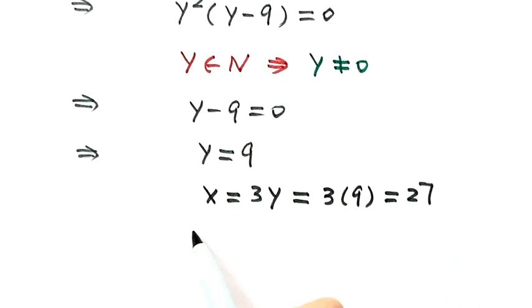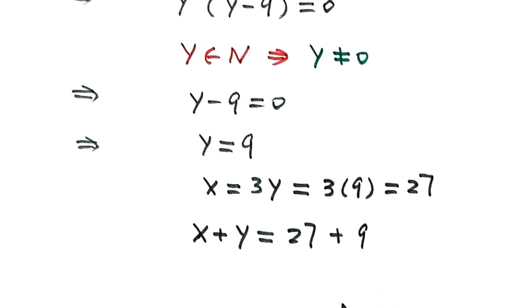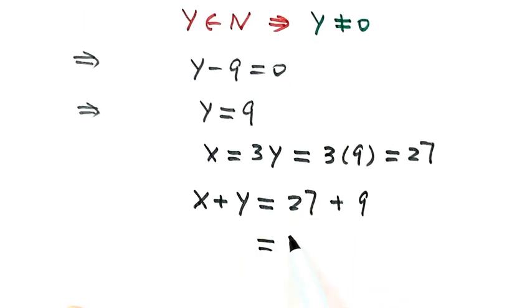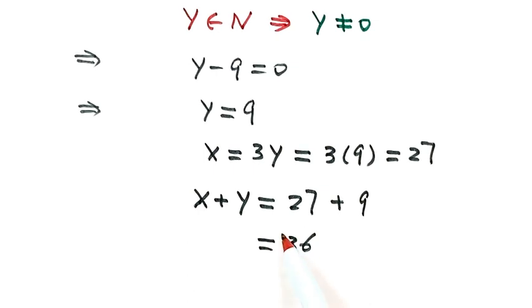The question is, what is x plus y? x is 27, y is 9. Then the answer is 36. 36 is the answer for this question. Thanks for watching.